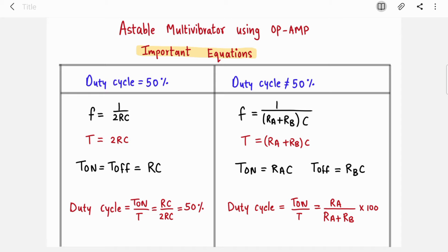Here duty cycle was simply T_on RC upon 2RC which is 50 percent. And here duty cycle is T_on upon T, which becomes RA upon (RA + RB) into 100. For designing astable multivibrator, you will need these equations. If duty cycle is given as 50 percent, use these equations. If duty cycle is 40 percent, 60 percent, anything other than 50 percent, then use these equations.